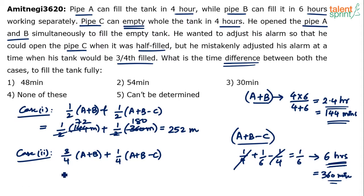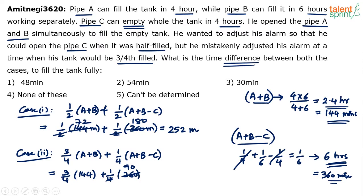In case two, the time required is three-fourths of 144 plus one-fourth of 360. Three-fourths of 144 is 108, and one-fourth of 360 is 90. So the total time for case two is 108 plus 90 equals 198 minutes.